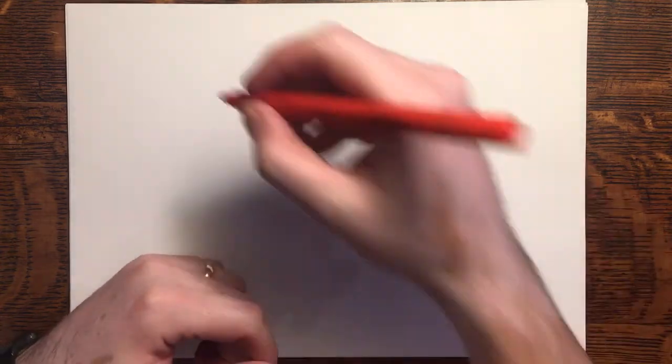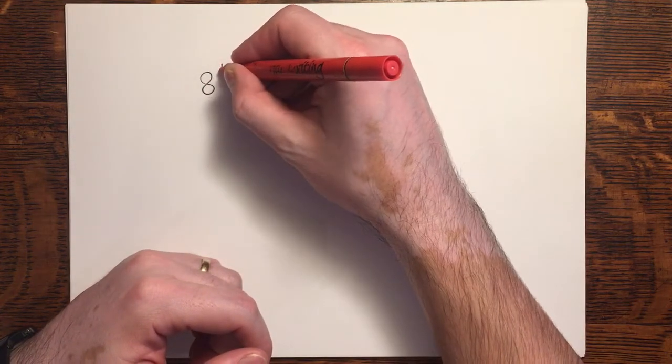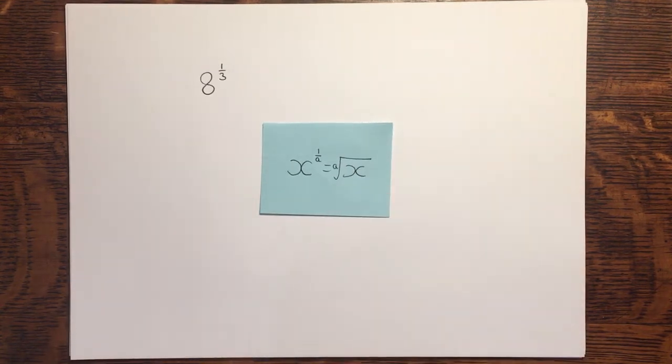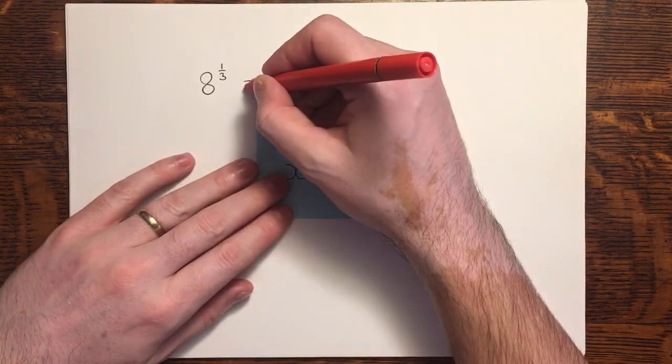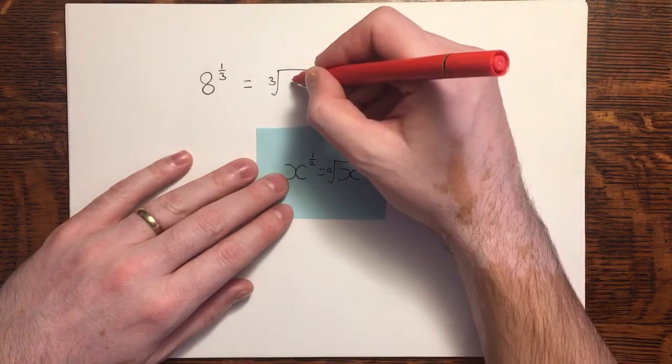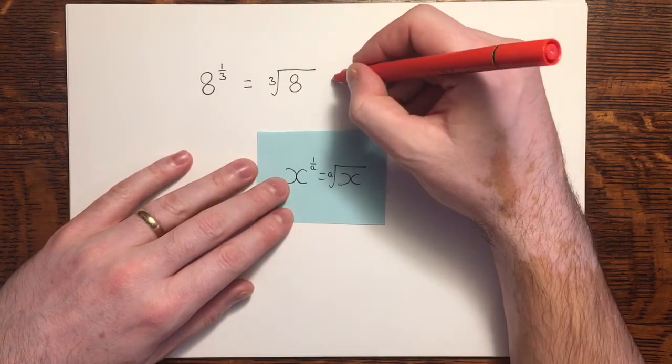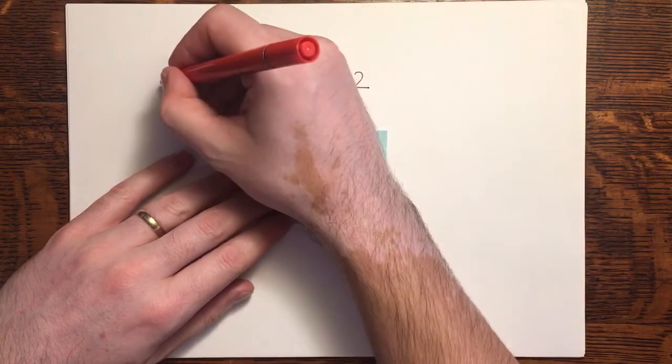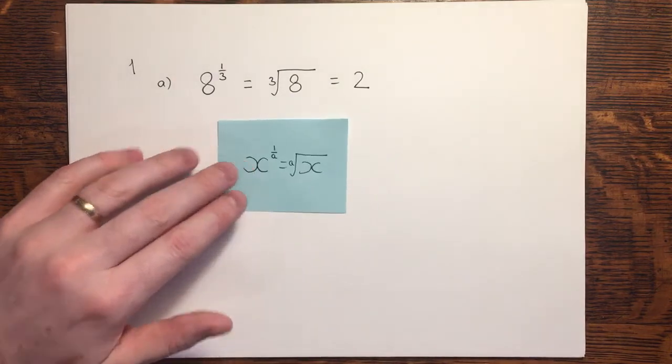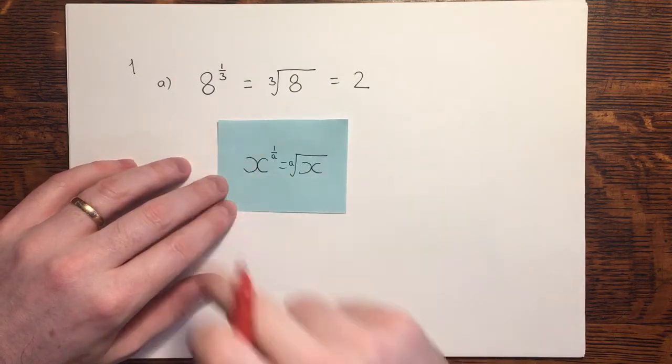So first of all question 1. We are asked to write down the value of 8 to the power of 1 third. In order to solve this I need to apply this rule. A fractional index results in a root. In this case the third or cube root of 8 which is 2. And that's question 1a completed using one rule and applying it to the situation.